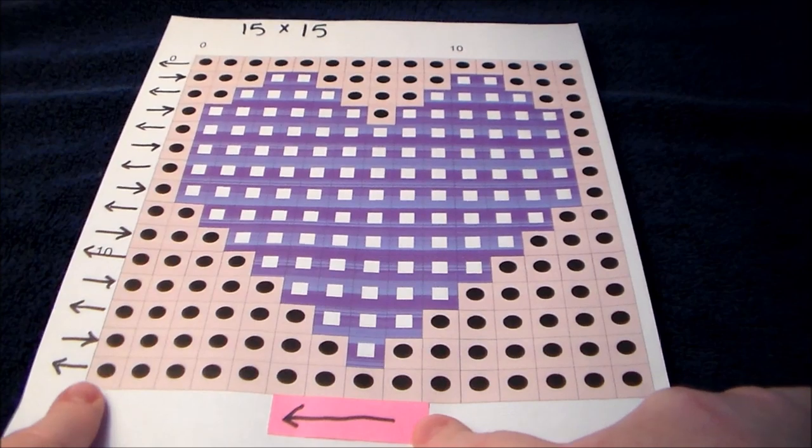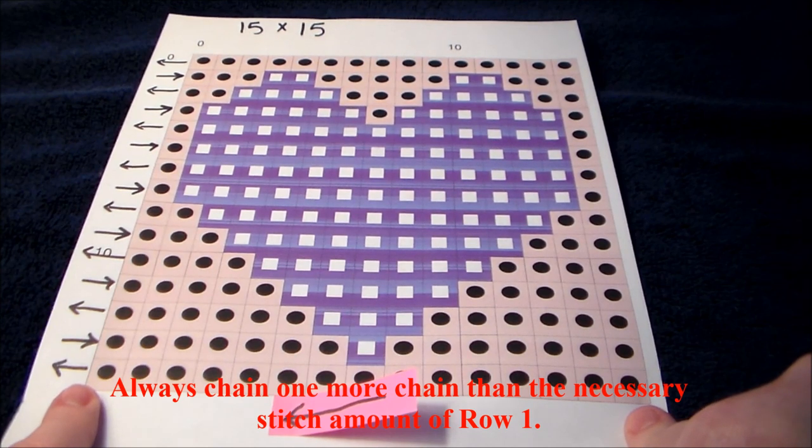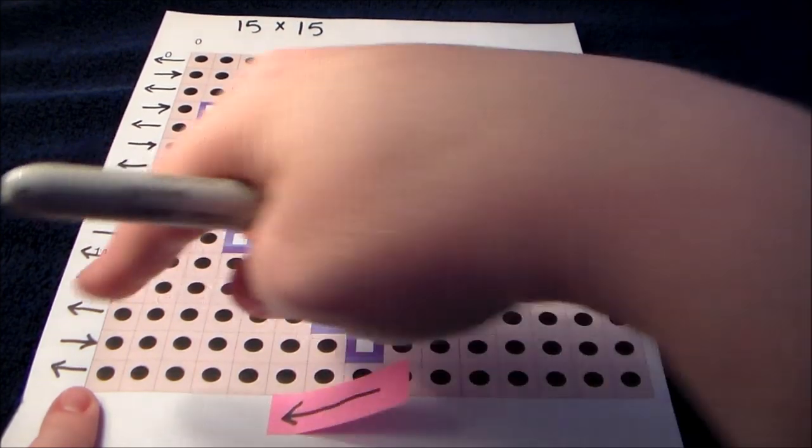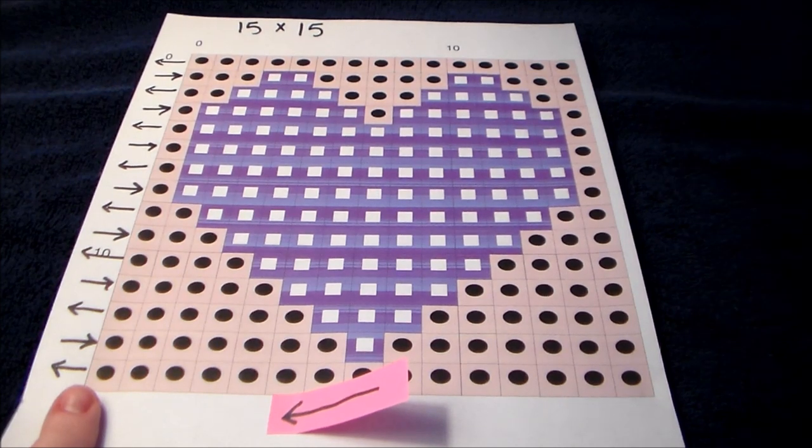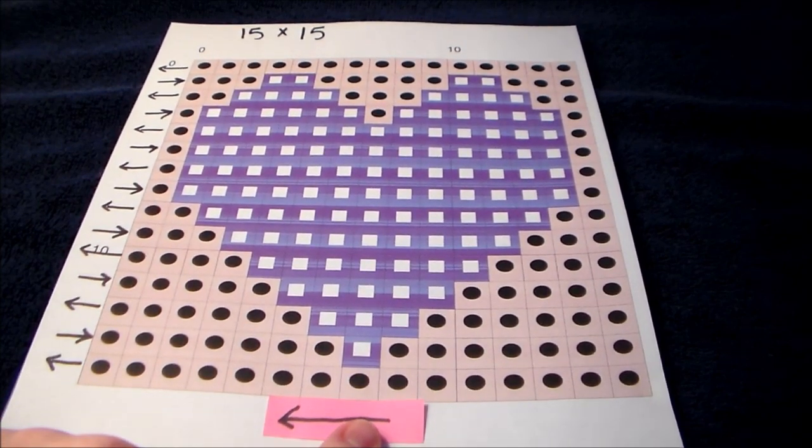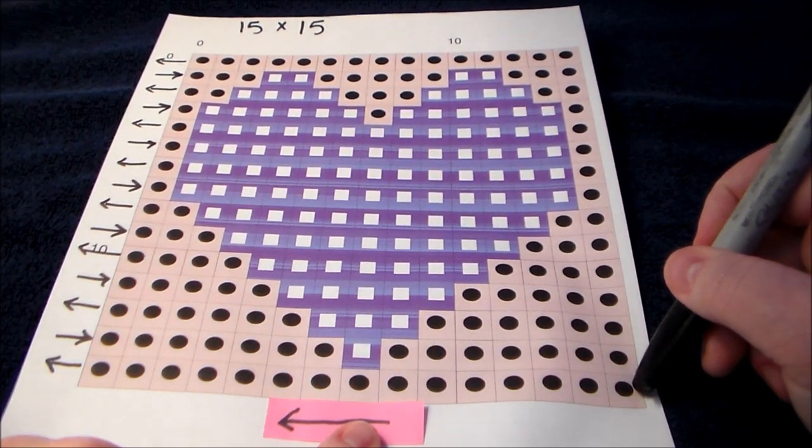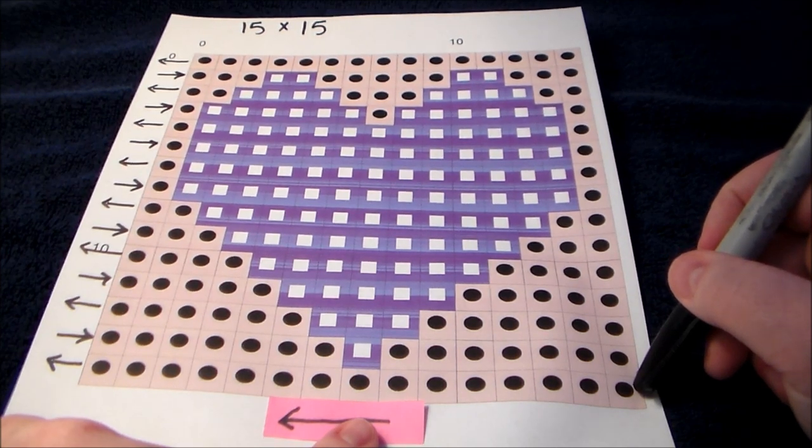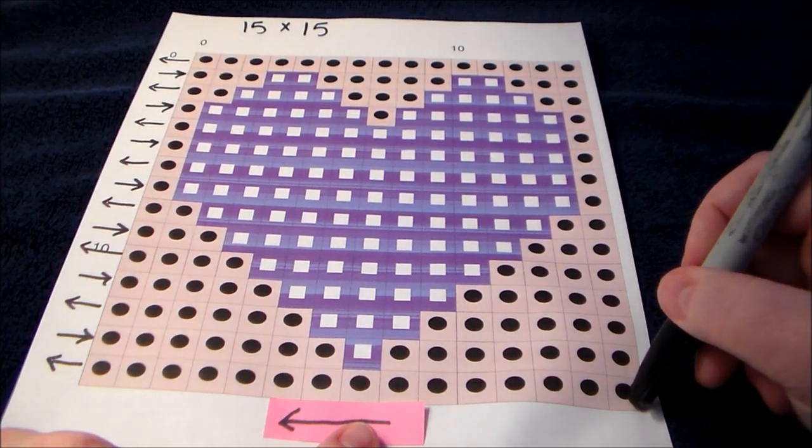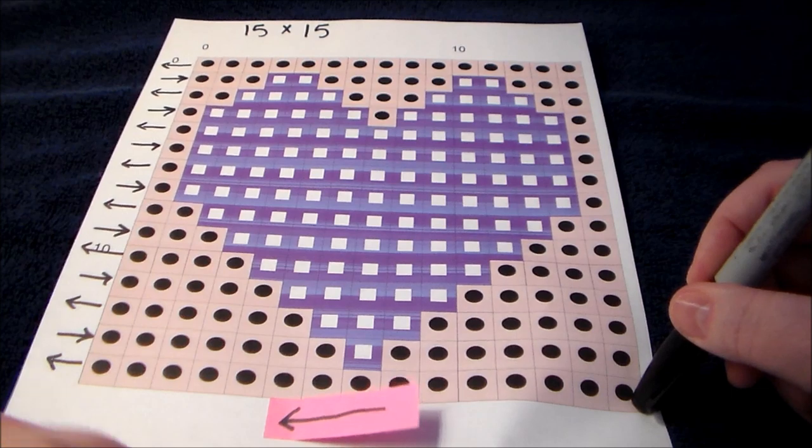So to get started we know that row one is 15 stitches. So we will need to chain 16 chains. So we will chain one chain more than the amount of boxes on row one which is the lowest row on the graph chart. So we chain 16 stitches and starting in the second chain from the hook we will place our first stitch of row one which is right here. Now our row one in this instance is all the same color. It's all pink. So that makes it pretty easy.